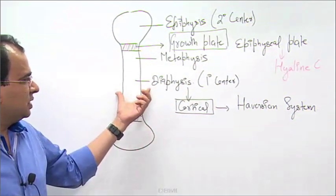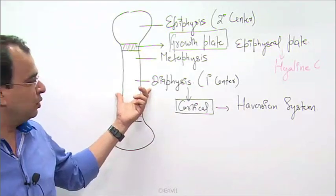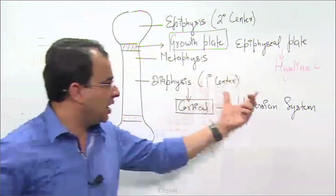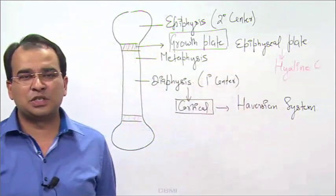So this is the diaphysis here, the shaft of a long bone, which is a cortical bone. You all know what cortical bone is, and it has an arrangement which is called the haversian system.